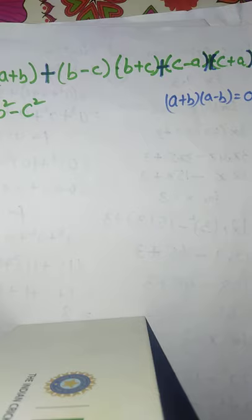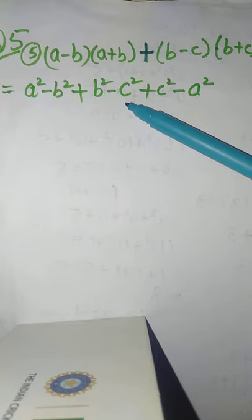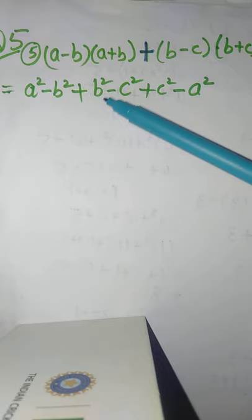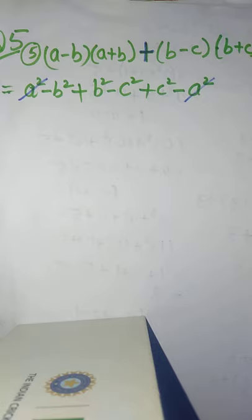Now the terms cancel: a square and minus a square cancel, b square and minus b square cancel, c square and minus c square cancel. So the answer is 0.